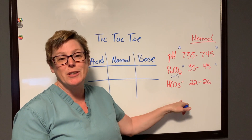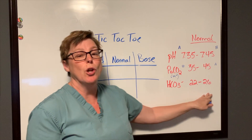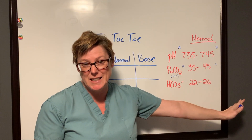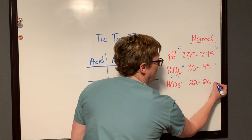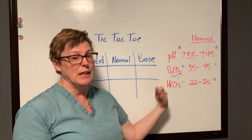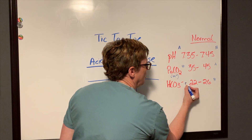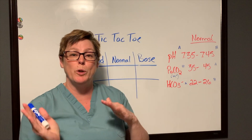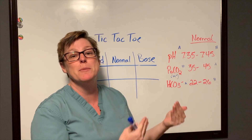Our bicarb is looking at the negative anions. So if I have lots of negative anions — greater than 26 — I'm more basic. And if I'm a little deficient, less than 22, I'm going to be acidotic. So now that we've reviewed those three elements and which side of them becomes acid and base, it's time to look at our tic-tac-toe.